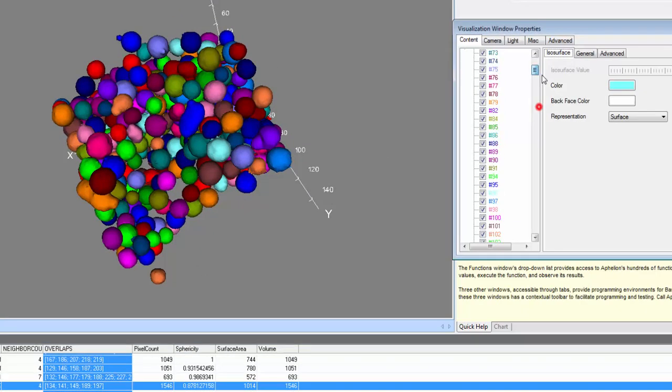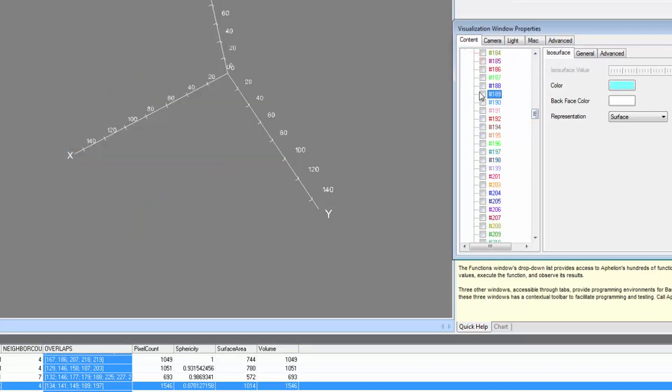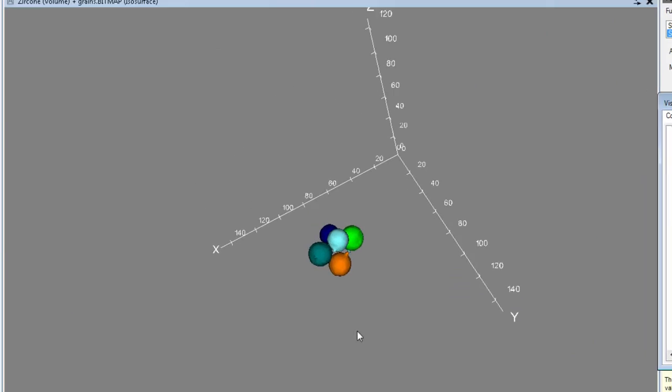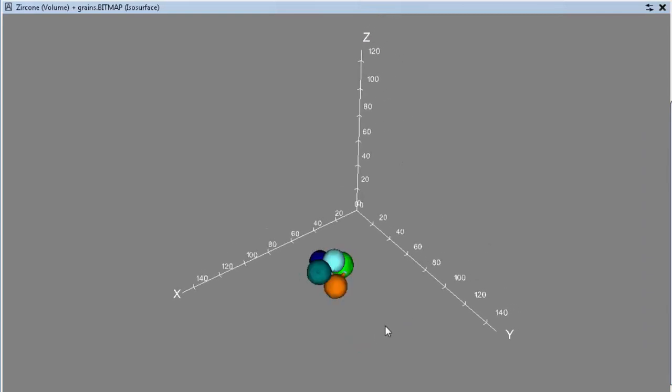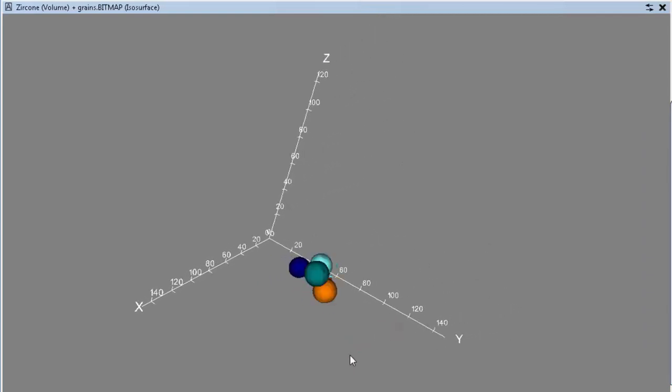The properties of the visualization window can be used to select just object 189 and its 4 neighbors. Now the object and its immediate environment can be explored in great detail.